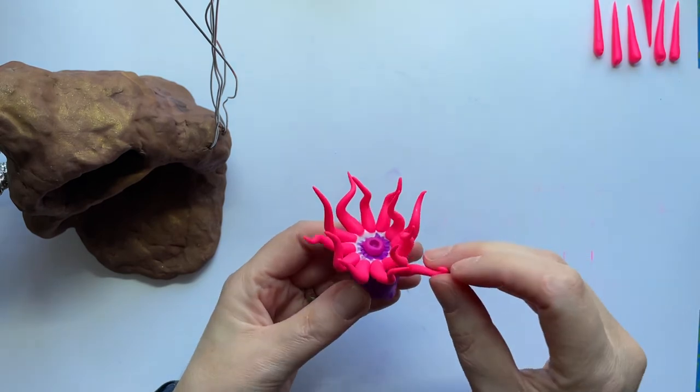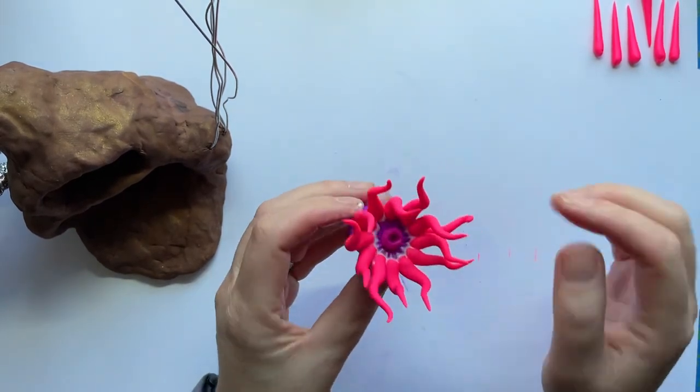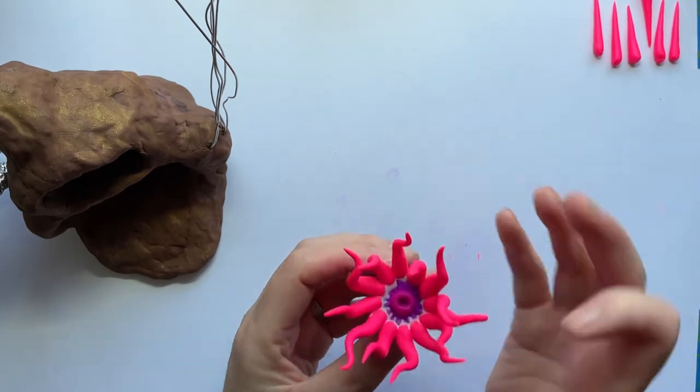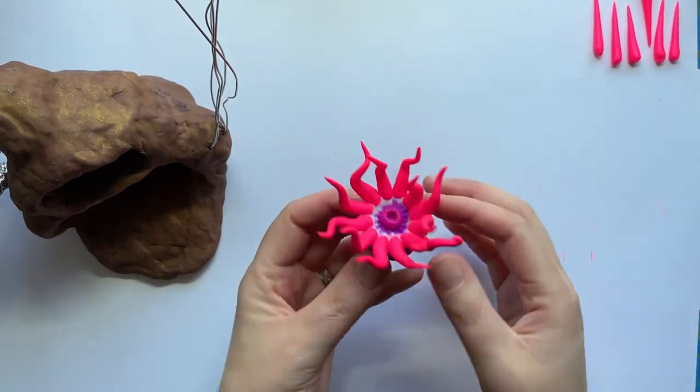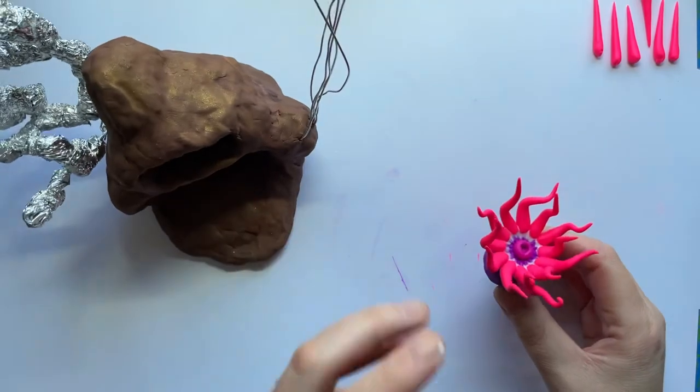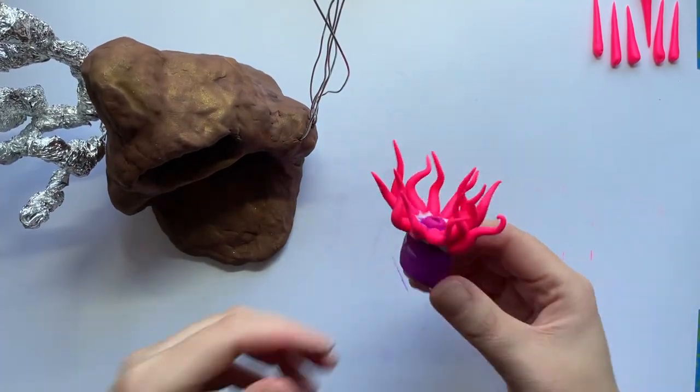And you can curl them, make them look all wavy. But once you add that second row on, it's gonna look really really wavy. Now pretend I've already done all that. Pretend I've already done my second row all the way around.